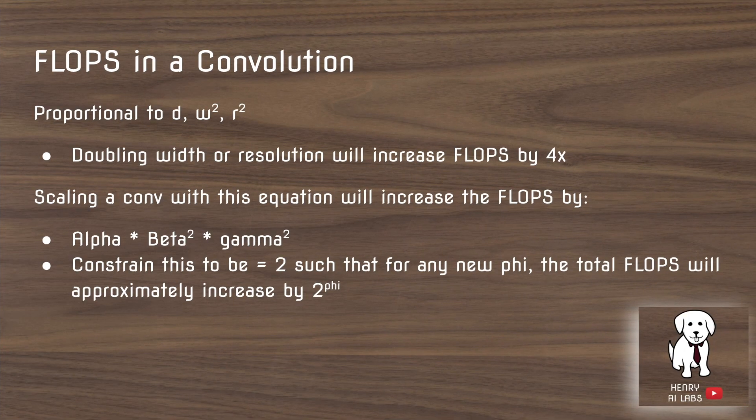Another interesting thing to consider is the floating point operations per second in a convolution, and how these different parameters change the computational complexity of a convolution operation. For example, doubling the width or resolution will increase floating point operations per second by four times in the network.